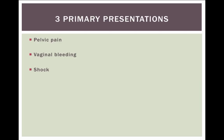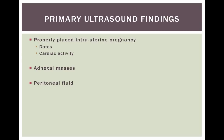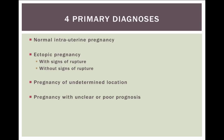To summarize: there are really only three primary presentations - pelvic pain and/or vaginal bleeding, and the patients in shock who already have a ruptured ectopic. There are only a few ultrasound findings we have to elicit: the properly placed intrauterine pregnancy, we want to measure dates, look for cardiac activity, completely evaluate the adnexa for any masses, and look in the complete abdomen and pelvis for free or complex peritoneal fluid. The diagnoses are: normal intrauterine pregnancy, ectopic pregnancy with or without signs of rupture, pregnancy of undetermined location, and pregnancies with unclear or poor prognosis - those with sacs that don't match, fetal pole without heart tones, or very large subchorionic hemorrhages.